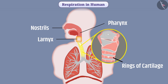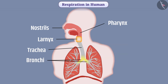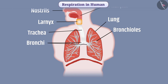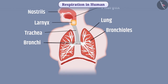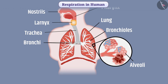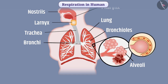Rings of cartilage are present in the trachea to ensure the air passage does not collapse. Two bronchi originate from the trachea; one bronchus enters into one lung. Inside the lung, the bronchus divides into bronchioles. Air from the trachea flows into the lungs via the bronchi and bronchioles. In the lungs, bronchioles terminate into alveoli. Alveoli are like a bunch of grapes. In the wall of alveoli, there is a network of blood vessels. The surface of alveoli is thin, due to which oxygen is taken from the surface of alveoli into the blood, and carbon dioxide present in the blood is released into the alveoli.